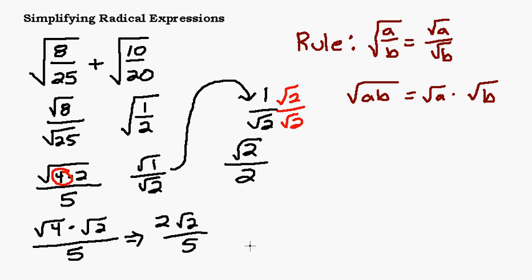Now what we have if we join this with our other part: we've got 2√2 over 5 from simplifying the first radical plus √2 over 2 from simplifying the second radical.